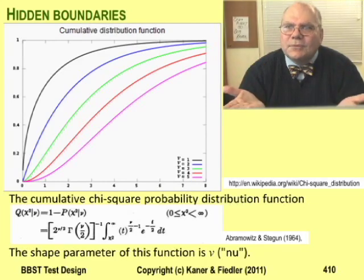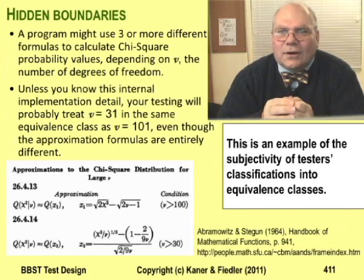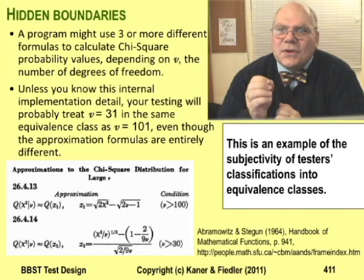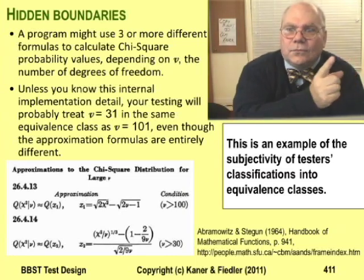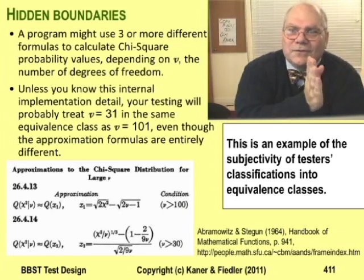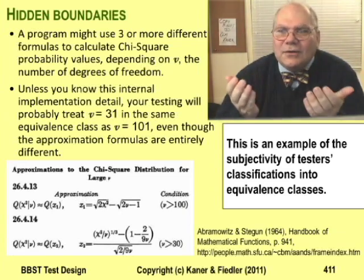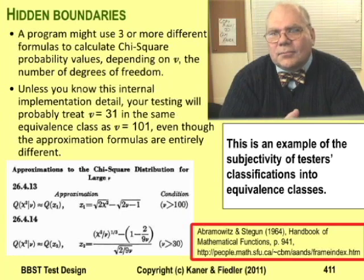This is a common problem in statistical programming — many of the most important functions can only be approximated. Now, imagine testing a statistical program that calculates an approximation for chi-square. How do you test how good that calculation is? The hidden boundary problem here is that there are different approximation formulas for different values of nu. So, to test successfully, you have to test each of the formulas — this formula for these values of nu, this formula for these values of nu, this formula for these values of nu. Without access to the code, how do you know that the program has switched formulas, or when?